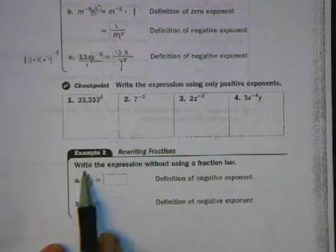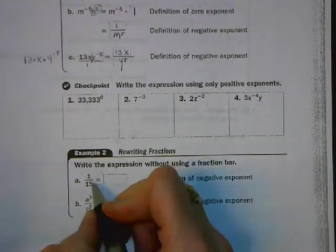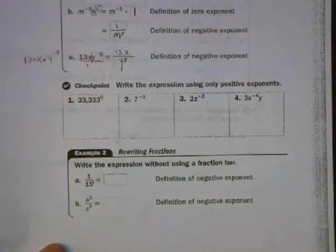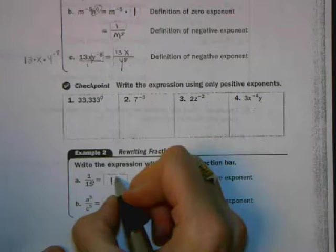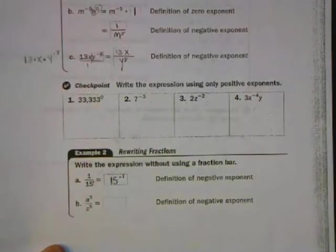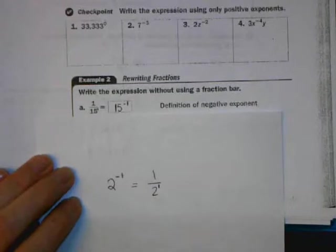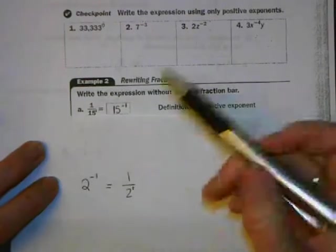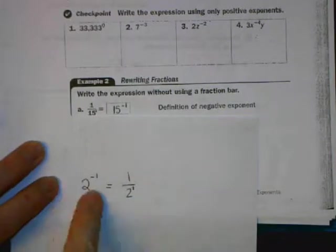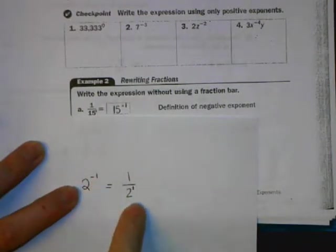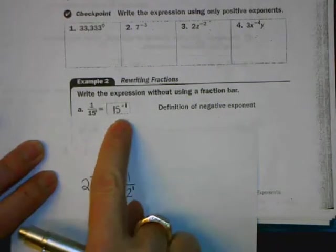The directions for this section say, write this expression without using a fraction bar. Well, what I can do is I can think of this as being 15 to the positive 1 power, and I remind myself that 15 to the positive 1 on the bottom is the same as 15 to the negative 1 on the top. This is no different than what we did when the bases were 2. And notice that in this case, we happen to have the equal sign is in essentially a different direction here. Here we started with a base with a negative exponent and rewrote it as a fraction. Here we're starting as a fraction and rewriting it as a base with a negative exponent.